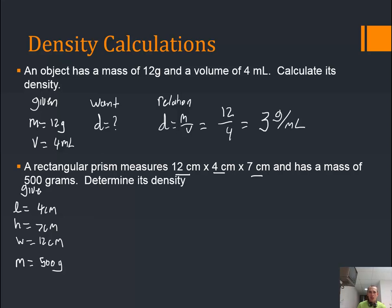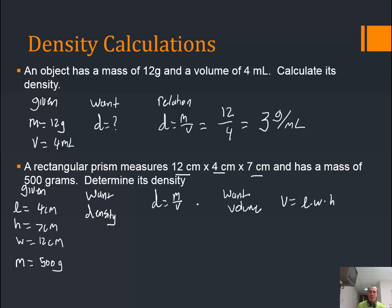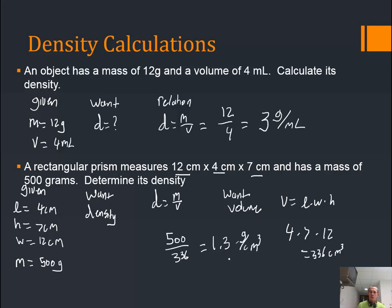What I want is density. To get density I need mass divided by volume, but I don't have volume — I have length, width, and height. So I also need to find volume first using volume equals length times width times height. This is a two-step process. Volume equals 4 times 7 times 12: 4 times 7 is 28, times 12 is 336 cubic centimeters — cubic centimeters because we took centimeters times centimeters times centimeters. Then density equals 500 divided by 336, which is a little more than 1 — approximately 1.3 grams per cubic centimeter. Feel free to use a calculator when doing this math.